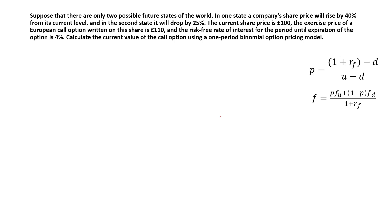Let's look at an example. Suppose there are only two possible future states of the world. In one state, a company's share price will rise by 40% from its current level; in the second state it will drop by 25%. The current share price is £100. The exercise price of the European call option written on this share is £110, and the risk-free rate is 4%. Calculate the current value of the call option using a one-period binomial option pricing model.